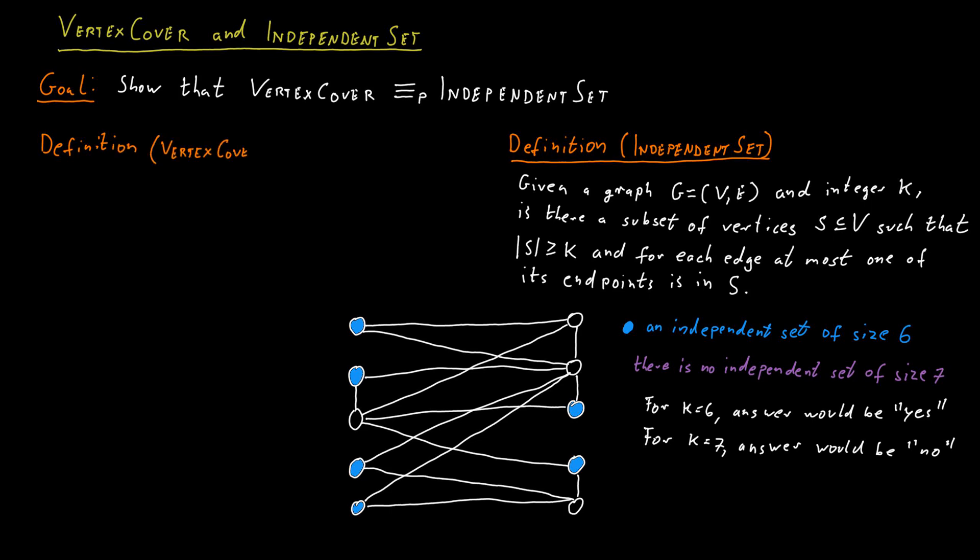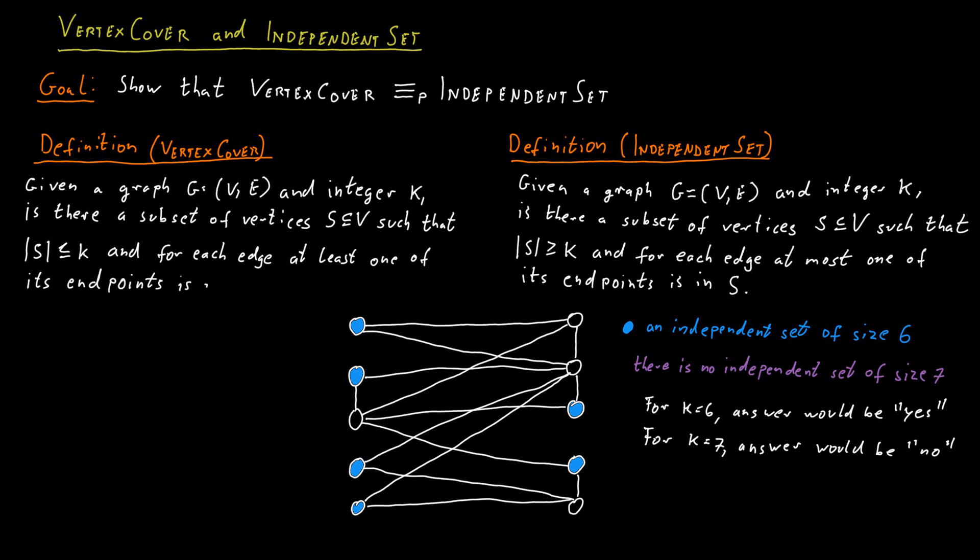The vertex cover problem is as follows. We are given a graph G and an integer K. The question is: is there a subset of vertices S with at most K vertices such that for each edge in the graph, at least one of its endpoints is in S?